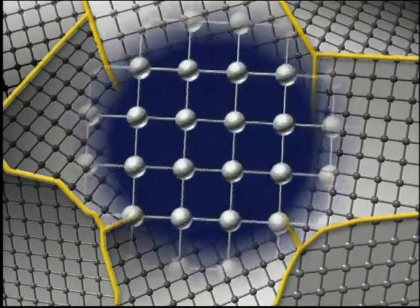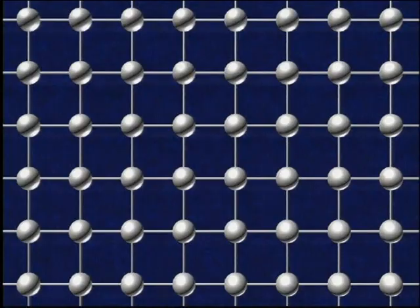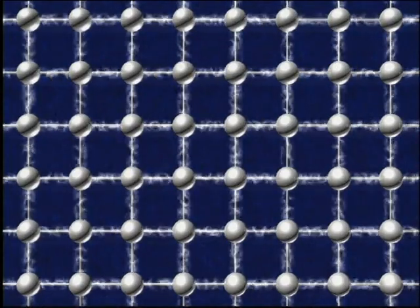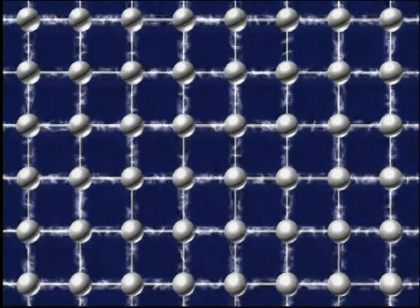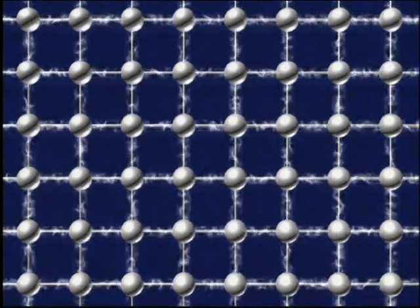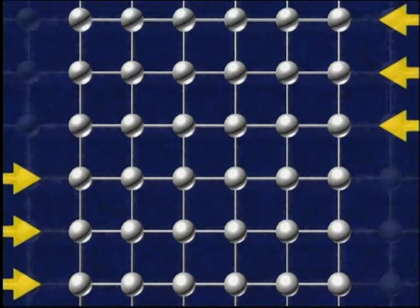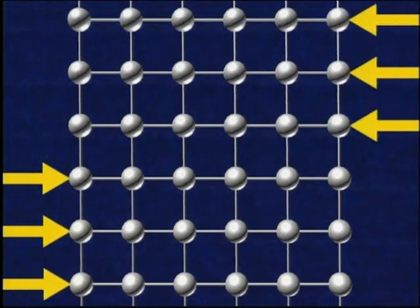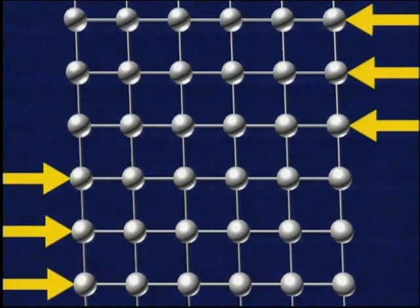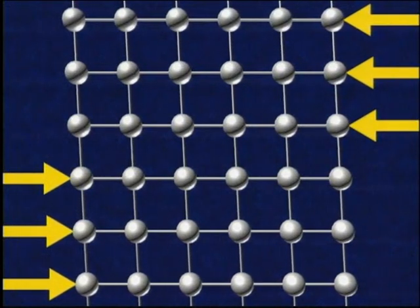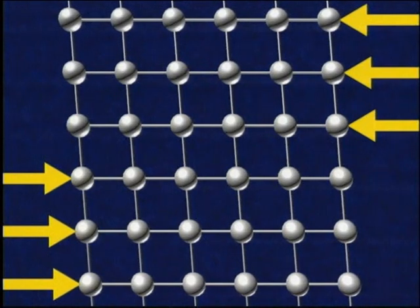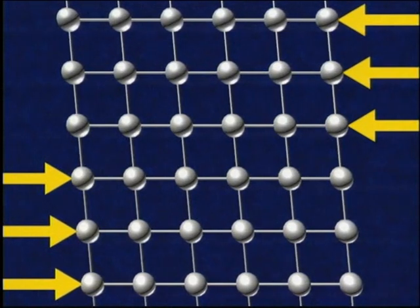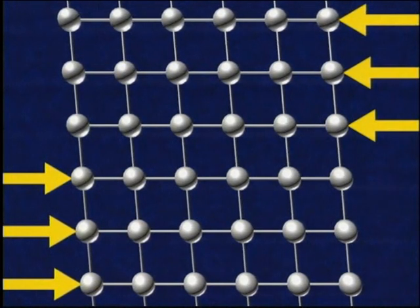All atoms in these crystalline structures are held in place by electromagnetic attraction to neighboring atoms. If a force, or load, is applied to a metal, these electromagnetic bonds stretch, allowing the atoms to move slightly.